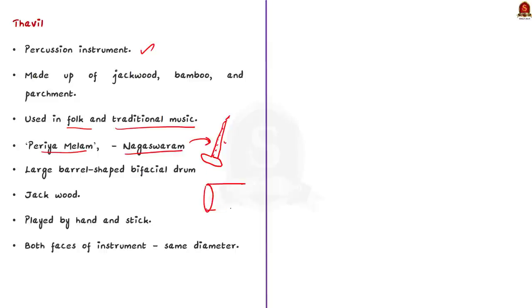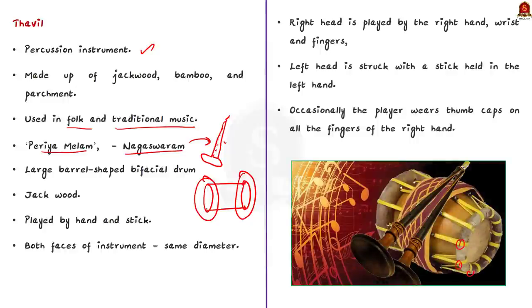Both the faces of the instrument are almost of the same diameter. Here also, both openings are covered by layered skin and tied over the rim with the help of bamboo hoops and braces. The next main difference between Tawil and Mridangam is that while Mridangam is played only by hands on both sides, Tawil is played by hand and a stick. The right face is played by the right hand, wrist and fingers and the left face is struck with the stick held in his left hand. Occasionally, the player wears thumb caps on all the fingers of the right hand.